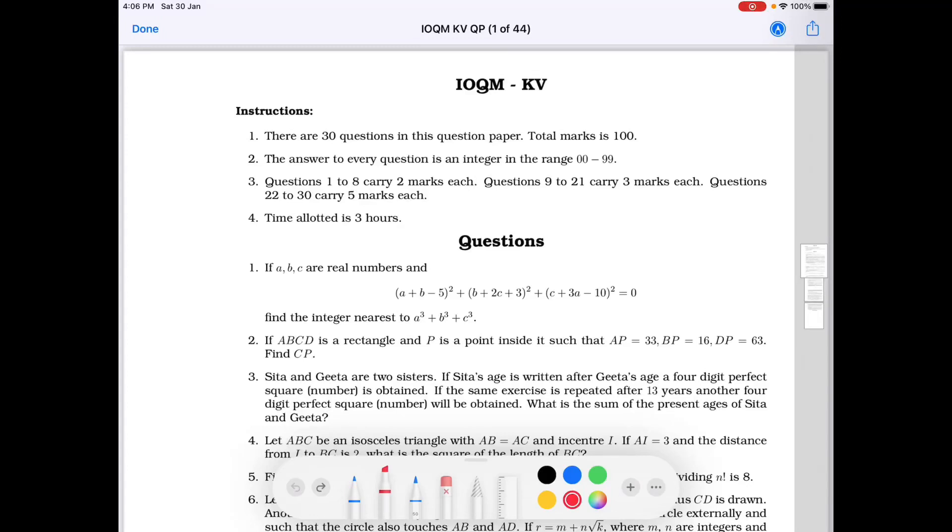First of all, let's see the instructions of this question paper. There are 30 questions in this question paper, total marks is 100. And marks distribution is given in the third instruction. Questions 1 to 8 carry 2 marks each, questions 9 to 21 carry 3 marks each, and questions 22 to 30 carry 5 marks each.